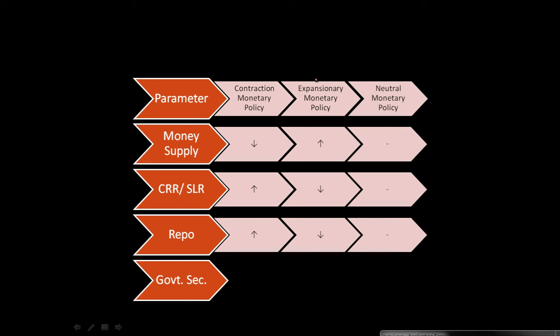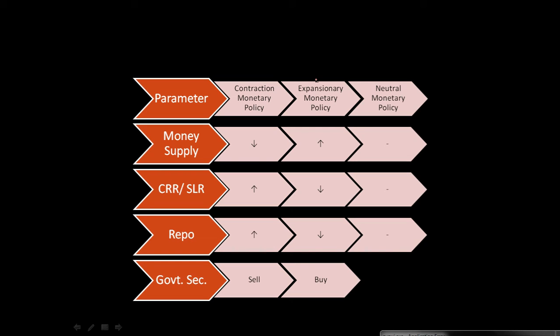Now what will happen about government security? What will they do with the government security? If they want to decrease the money supply, they will sell the government security. When they sell the government security, of course banks will buy that government security and they will give some money to the RBI, so money supply will decrease. Exactly the opposite: they buy the government security in the expansionary monetary policy.